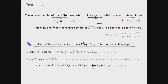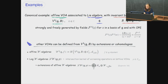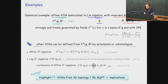Secondly, logarithmic W-algebras are defined as intersection kernels of certain screening operators on a lattice VOA—defined by restriction from lattice VOAs—and they have been shown to be extensions of the affine W-algebras. What I would like you to take away as the punchline is how such algebraic structures have appeared recently in two contexts in relation to 3D topology and 3D supersymmetric quantum field theories.